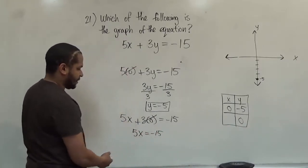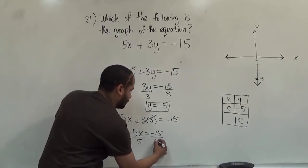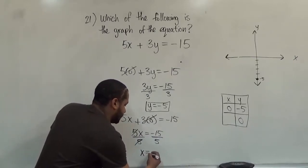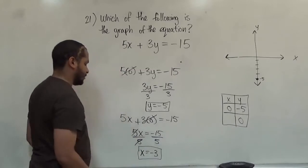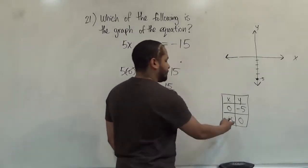The next step now, divide by 5 on both sides. And here we get 5, 5. This goes away. And my x value equals negative 3. So when my y value equals 0, my x value equals negative 3. I plug that into this little box and I get my second coordinate.